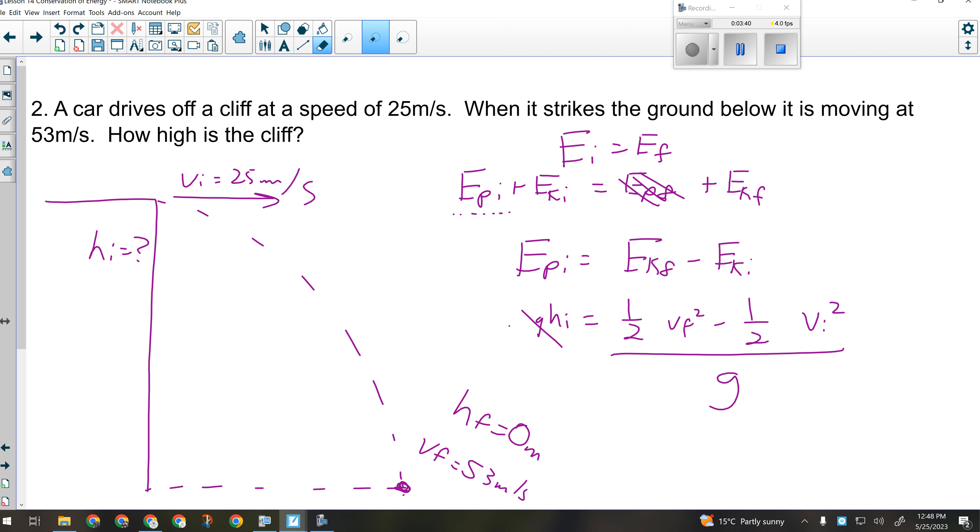When you guys first started these questions, this algebra was intimidating, wasn't it? All right. So now we're solving for H I. So we just have to plug in our numbers here. So one-half times 53 squared minus one-half times 25 squared divided by 9.81 will give us the height of the cliff.